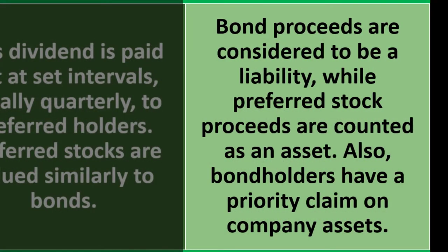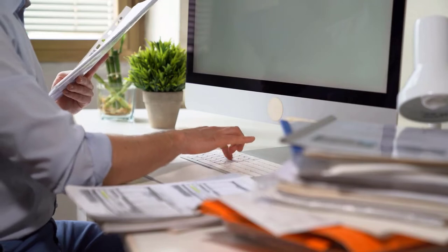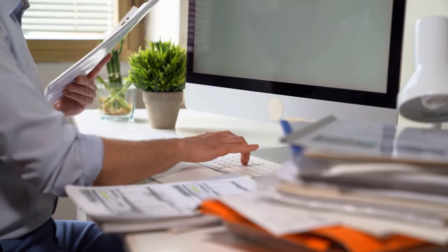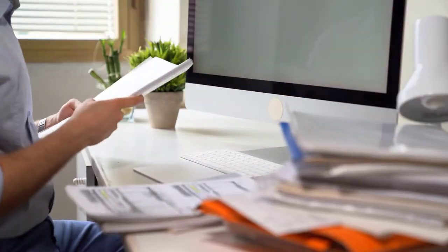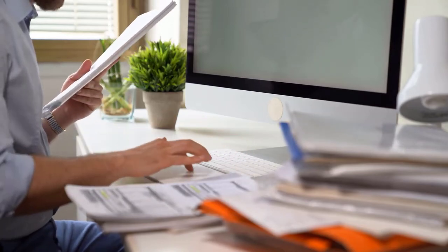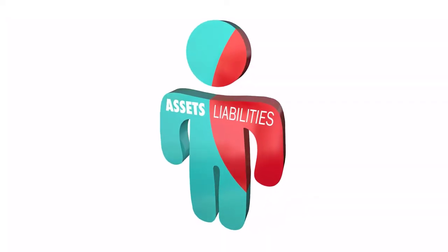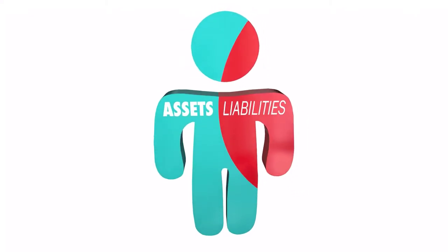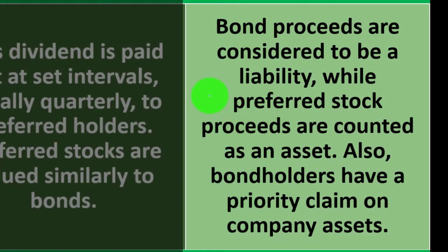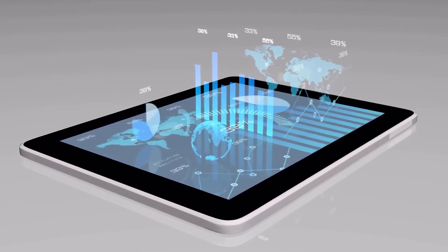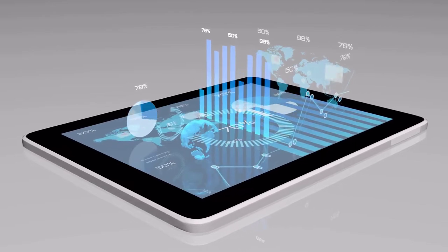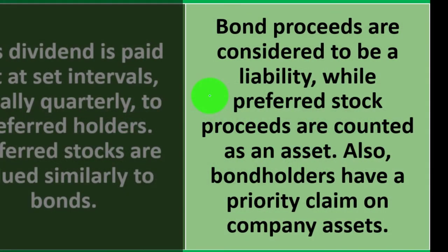Bond proceeds are considered a liability, while preferred stock proceeds are counted as an asset. Bond holders have a priority claim on company assets. On the accounting side, when a company issues a bond, it's recorded on the liability side — bonds payable that must be paid back. Preferred stock proceeds are counted as equity, meaning there's no debt instrument liability. The accounting equation is assets equal liabilities plus equity — liabilities are owed to third parties like bondholders, while equity is owed back to owners.